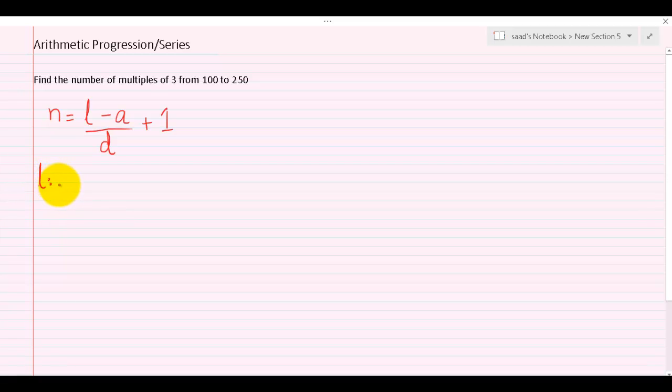I'll just rewrite here that l is for the last term, a is the first term, and d is the common difference. And of course n is the number of terms, exactly what we're looking for.